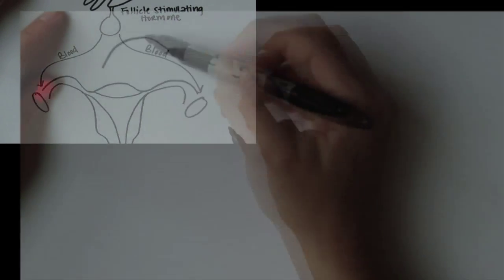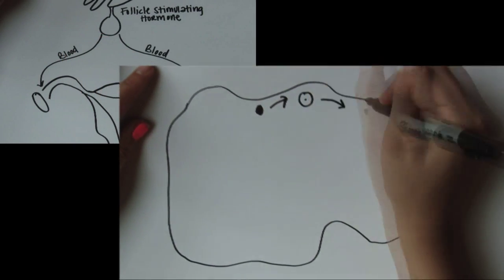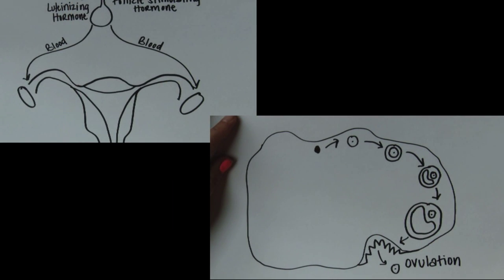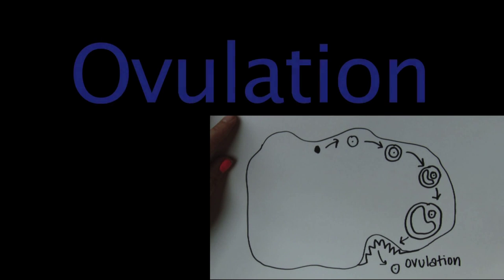As the egg matures, the pituitary gland will begin to secrete another hormone, luteinizing hormone, or LH. During the middle of the cycle, there will be a sudden spike in LH which will trigger the release of the egg known as ovulation.